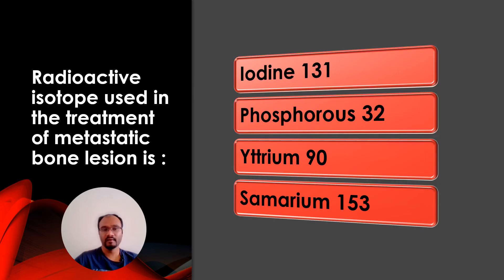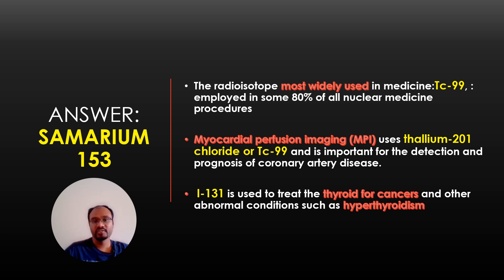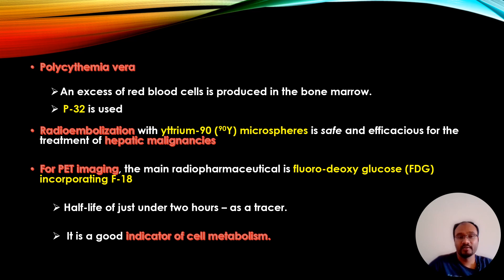The next question: The radioactive isotope used in the treatment of metastatic bone lesions is: iodine-131, phosphorus-32, yttrium-90, or samarium-153. The correct answer is samarium-153. The radioisotope most widely used in medicine is technetium-99, employed in 80% of all nuclear medicine procedures. Myocardial perfusion imaging uses thallium-201 chloride or technetium-99, important in detection and prognosis of coronary artery disease. Iodine-131 is used to treat thyroid cancers and conditions such as hyperthyroidism.